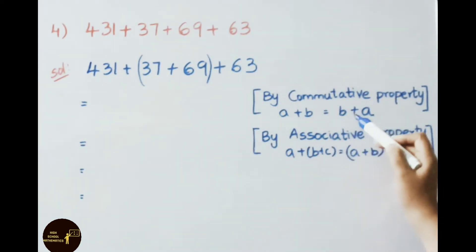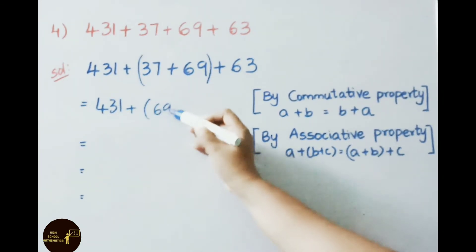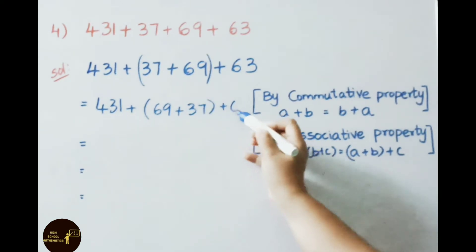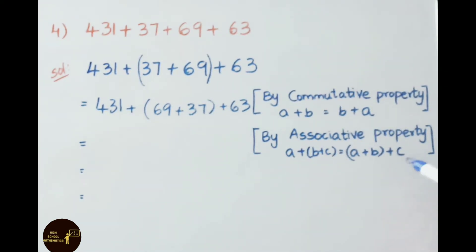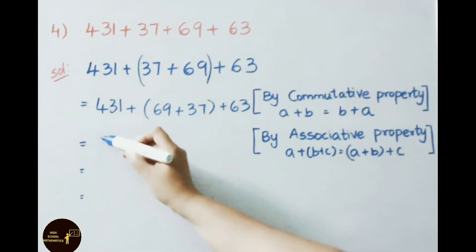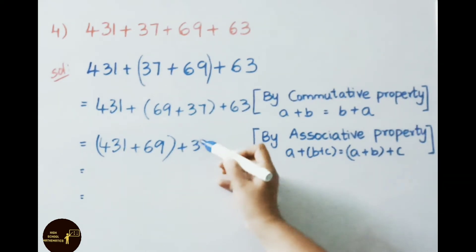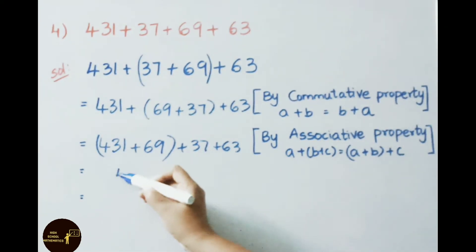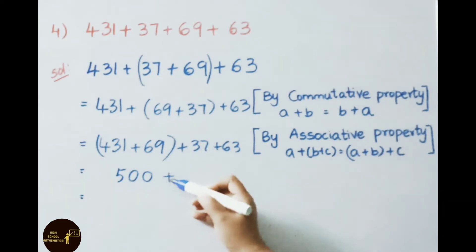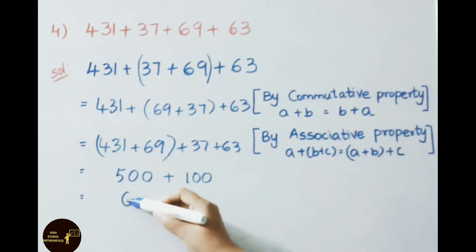So let us write 431 plus 69 plus 37 plus 63. Now these numbers look like associative property: A plus B plus C can be written as (A plus B) plus C. So we write (431 plus 69) plus (37 plus 63). Adding: 431 plus 69 equals 500, and 37 plus 63 equals 100. Then 500 plus 100 equals 600.